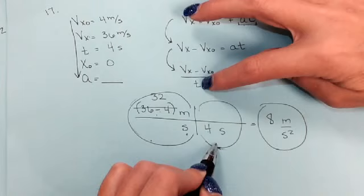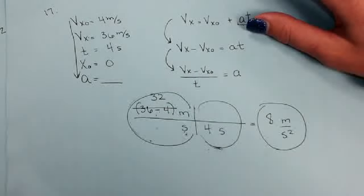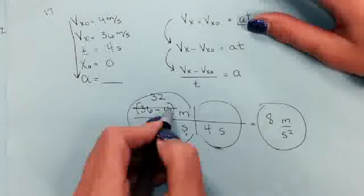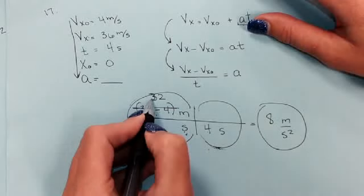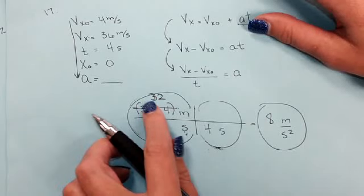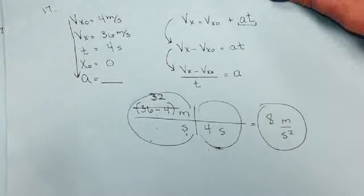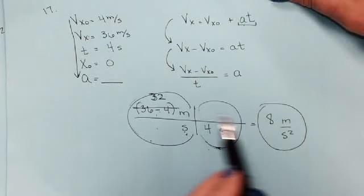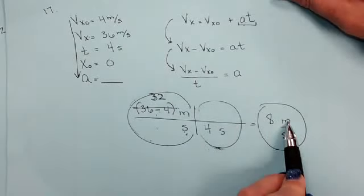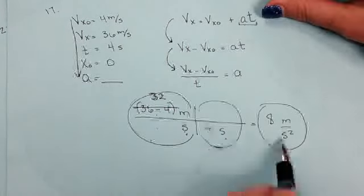If you put this in your calculator, 36 minus 4 in parentheses, divided by 4. Or if you want to in your head, you don't have to write all of this. You can just say 36 minus 4 is 32. You can just write 32 meters per second, just make sure you have your units. From this cross, I can tell that meters does not cancel out and S times S does not cancel out, it's second squared.